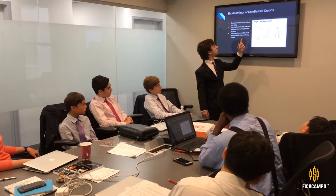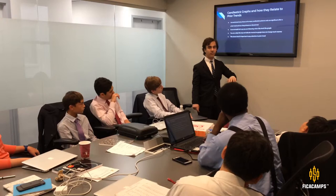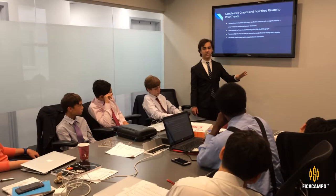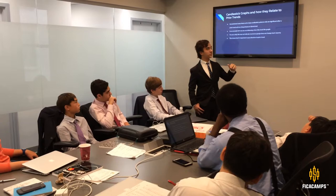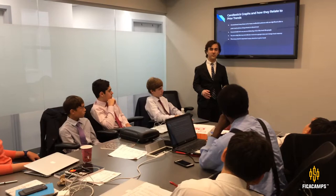Candlesticks and how they relate to prior trends: you can't just look at one candlestick and expect to know everything that's going to happen in the future — you have to look at the past. For example, if you're following a blue chip stock like Google, which is pretty stable, and you see a doji meaning there hasn't been any change in the price, that doesn't necessarily mean there's going to be a big reversal. It could just mean it's continuing to be stable.